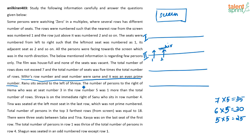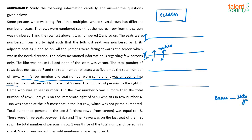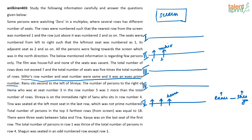Ranu sits second to the left of Shriya, so there is one person between them — noted down. The number of persons to the right of Hema, who is at seat number 3 in row number 5, is one more than the total number of rows. So Hema is sitting in row 5, meaning there are definitely at least 5 rows. Hema is in seat 3 of row 5.